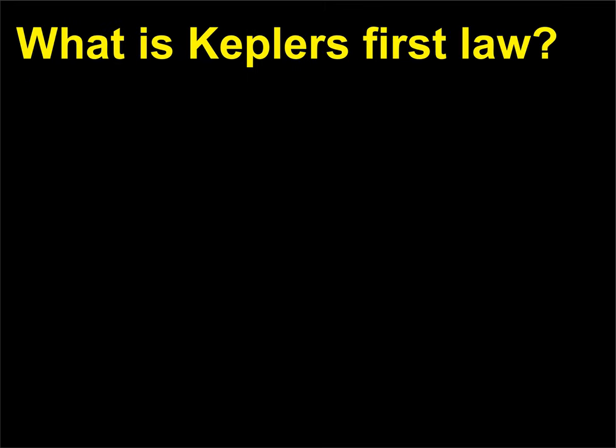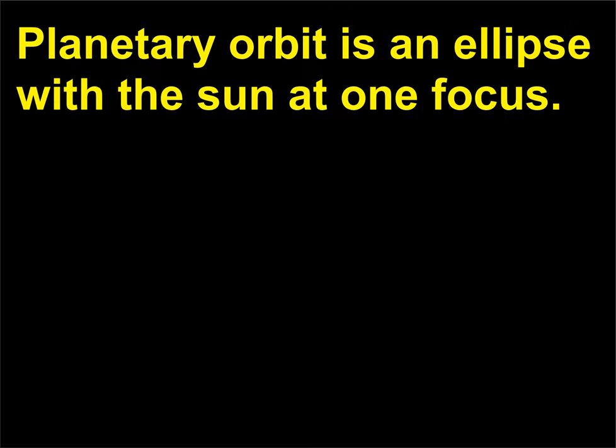What is Kepler's first law? Kepler's first law states that a planetary orbit is an ellipse with the sun at one focus.